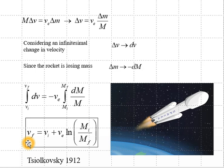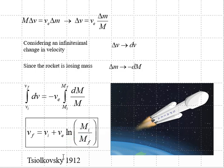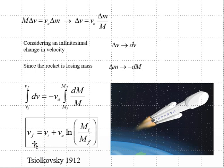On the left-hand side we have V final minus V initial. On the right-hand side, dM over M integrates to a logarithm evaluated between M initial and M final, giving the logarithm of the initial mass divided by the final mass. This is Tsiolkovsky's 1912 rocket equation. Notice that if M initial equals M final, we have the logarithm of 1, which is 0, so V final equals V initial — no change in rocket velocity if the masses are equal.